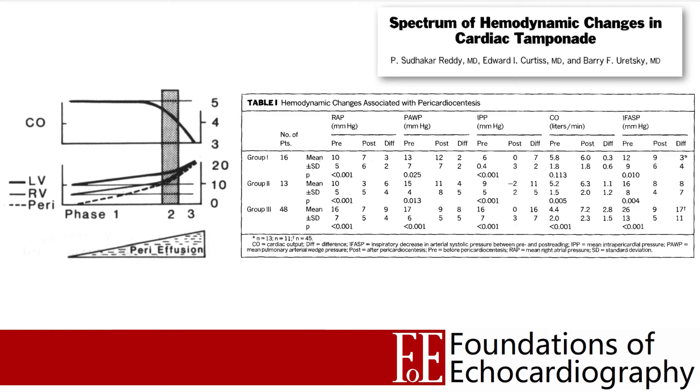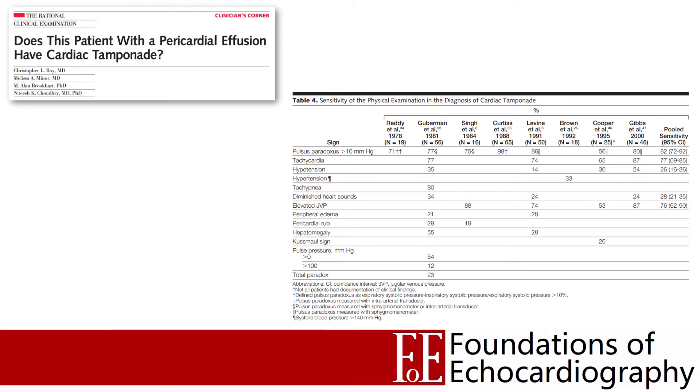You may have seen written that cardiac tamponade is a clinical rather than an echo diagnosis, and there is truth to this. To make a diagnosis of tamponade you require both clinical and echo findings. There are echo features which are highly suggestive and become diagnostic in the right clinical setting. Some findings can be seen using 2D and M-mode alone, within the competence of someone training in focused echocardiography — these are our focus. Spectral Doppler assessment is beyond the scope of a Level 1 examination.